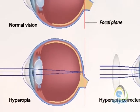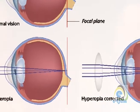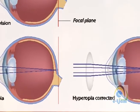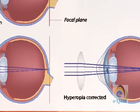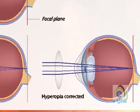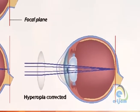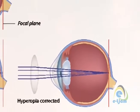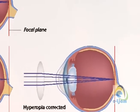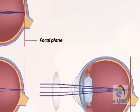With farsightedness, basically the opposite happens. Typically the eyeball is shorter than average, or the curvature of the cornea is flatter, which means that the light doesn't focus quickly enough, and so the focus is actually behind the retina. This causes distant objects to still be in focus, especially when you're young, but means the muscles in the eye already have to start working.